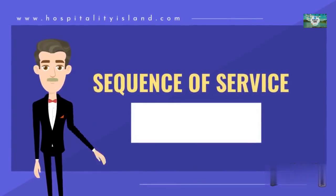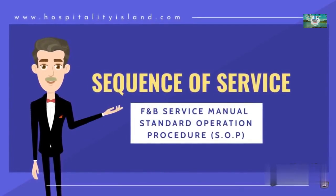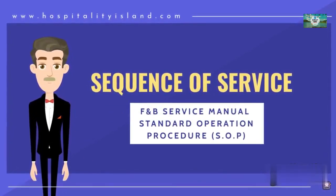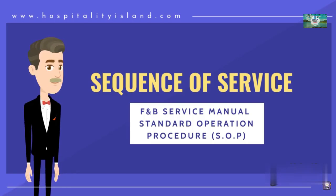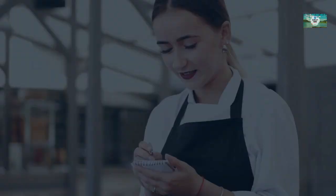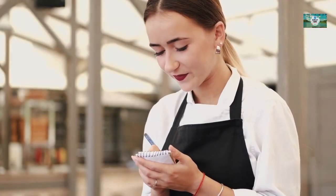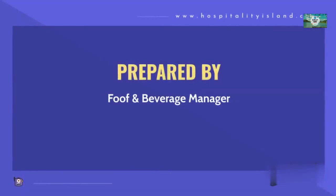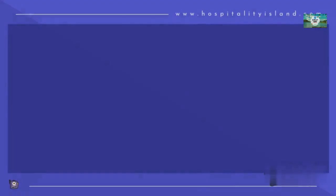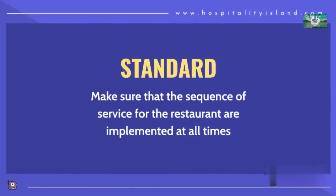In this training video presentation we will learn a very important topic about sequence of service for restaurants. This topic is part of the food and beverage department standard operation procedure (SOP) or F&B service operation manual. This standard is prepared by the food and beverage manager and approved by the general manager of the hotel, and is created to make sure that the sequence of service for the restaurant is implemented at all times by all restaurant service staff.